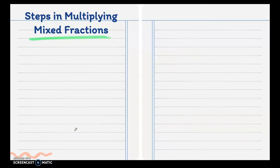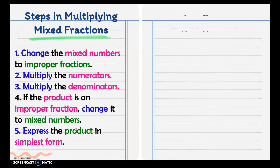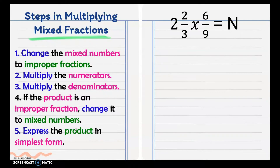Next: steps in multiplying mixed fractions. Mixed fractions are fractions that have a whole number and a fraction. Here are the steps: change the mixed numbers to improper fractions. When you change a mixed number to an improper fraction, you multiply the denominator and the whole number, then add it to the numerator.